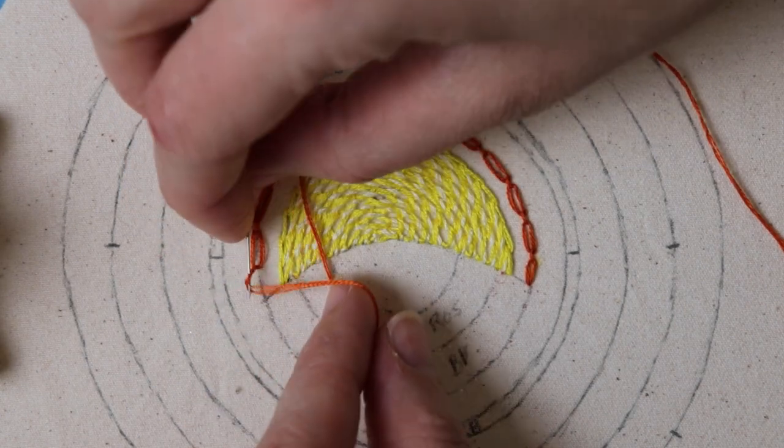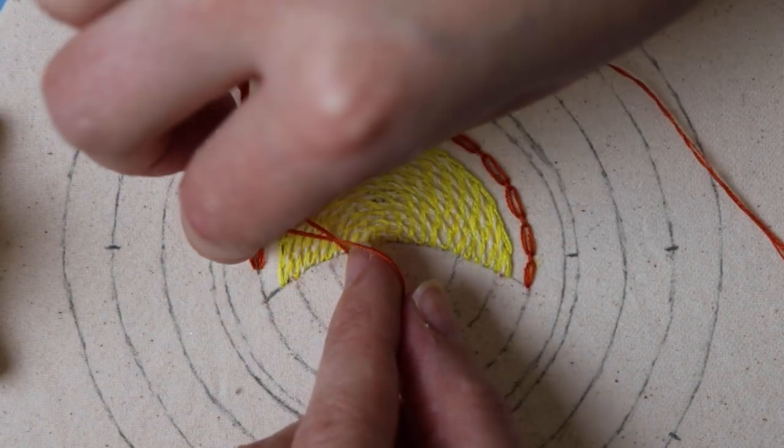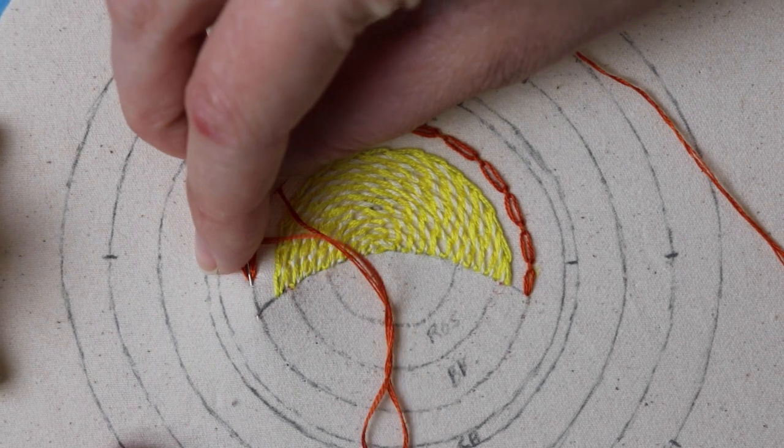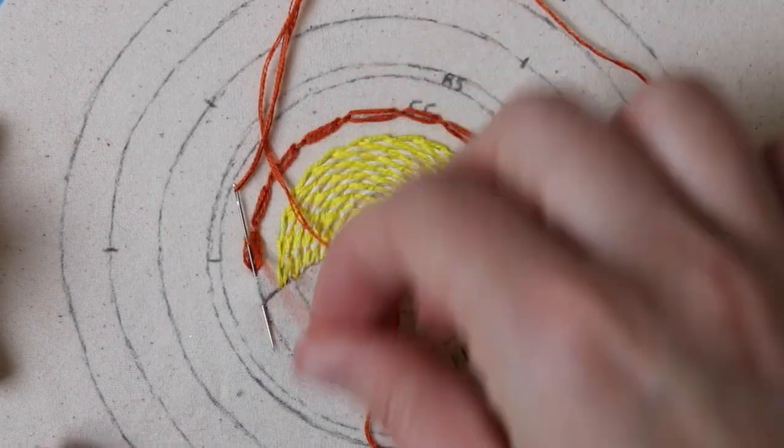This is at least a pretty easy one to end off. Once we get to the end here, we're just gonna do one last tacking stitch on our final chain all the way through the fabric and you're good to go.